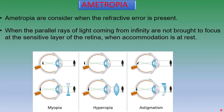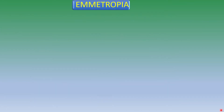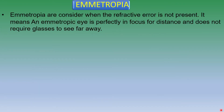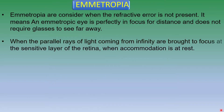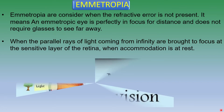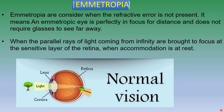Let's know about Emmetropia. Emmetropia is considered when the refractive error is not present. It means an emmetropic eye is perfectly in focus for distance and does not require glasses to see far away. When the parallel rays of light coming from infinity are brought to focus at the sensitive layer of the retina when accommodation is at rest.